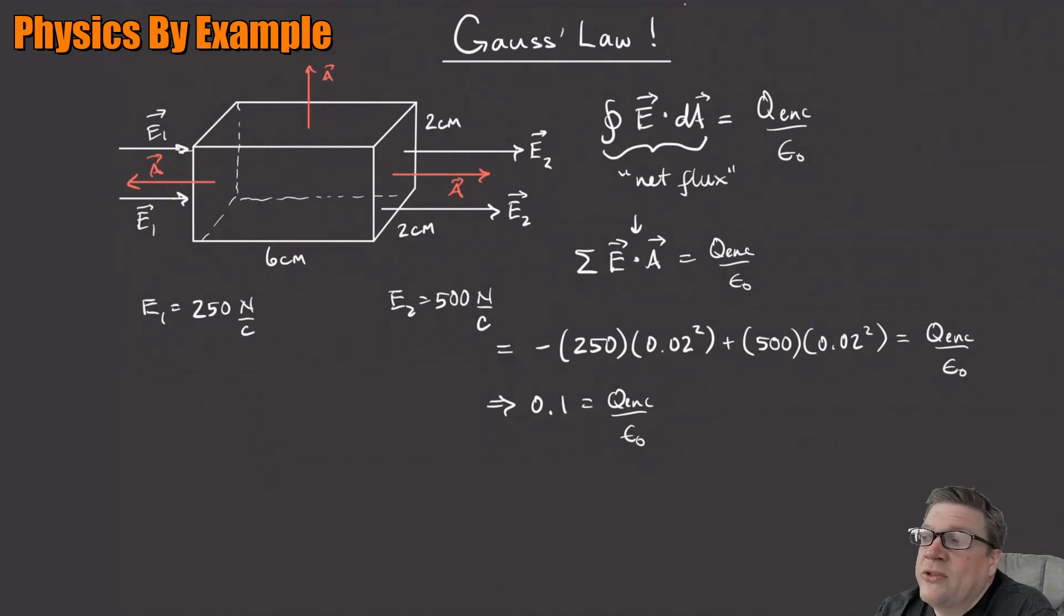So if there's more coming out than going in, you know that there has to be some source. Okay, so this is how you figure out how much. So just solving for Q enclosed, that means the amount of charge inside the box is just going to be 8.85 times 10 to the minus 13 coulombs.